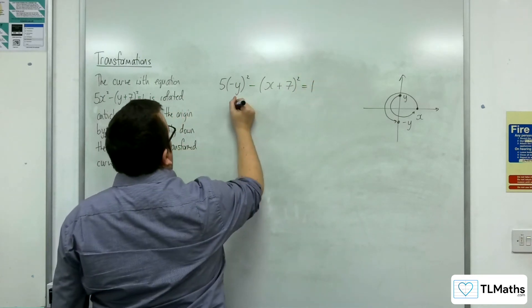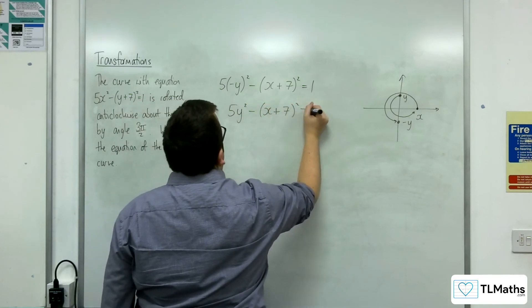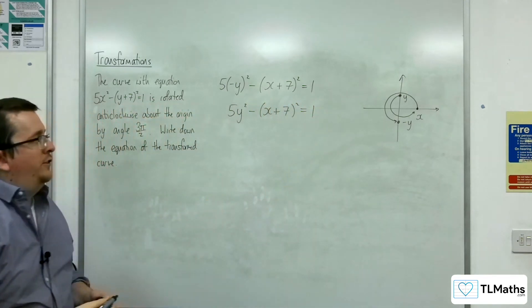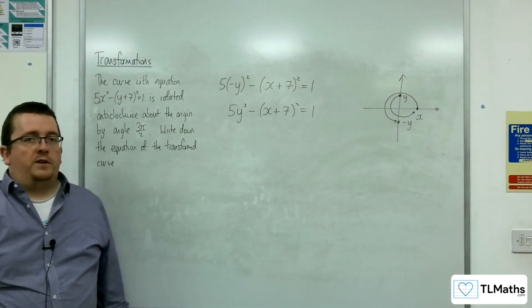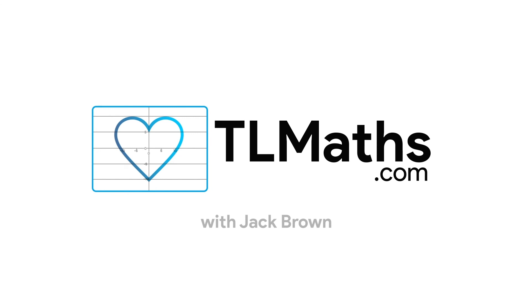And so we would have 5y squared take away x plus 7 all squared equals 1. And that's going to be the equation of the transformed curve.